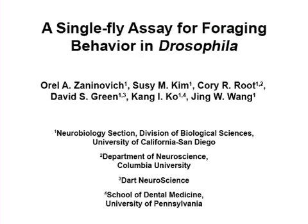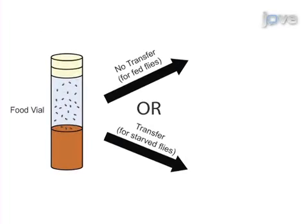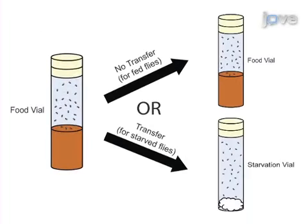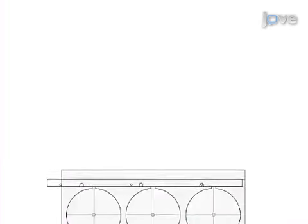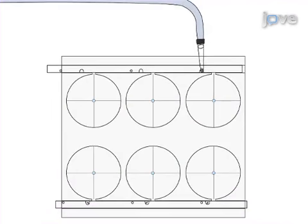The overall goal of this procedure is to quantify behavioral changes triggered by food deprivation in the adult fly Drosophila melanogaster. This is accomplished by first starving flies for 18 to 24 hours. The second step is to load individual flies into behavior chambers, each of which contains an attractive odor source at its center.